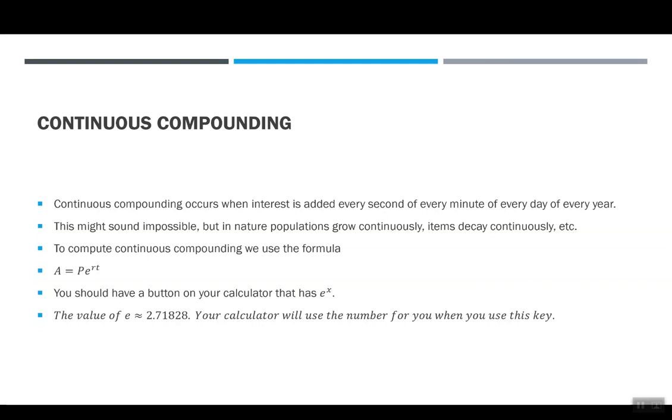If we're going to compute continuous compounding, we need one more formula, and it's A equals Pe to the RT. So A is still our future amount, P is still our present amount, R is still our interest rate, T is still time. But what's new is this E? You should have a button on your calculator that has E to the X. And just for curiosity, if you wanted to know what E is, it has a value of about 2.71828. It goes on forever. Your calculator knows this number, it holds this number in place. So when you hit it on your calculator, it's going to put that number in for you. You don't have to worry about it.